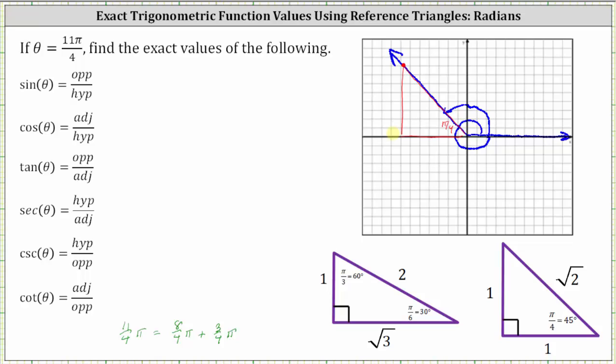Because we're in the second quadrant where x is negative, the leg along the x-axis is going to be negative one, not positive one. The opposite leg will be positive one, and the hypotenuse is always positive, which is square root two.